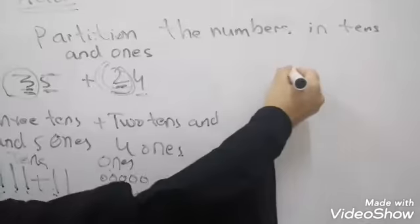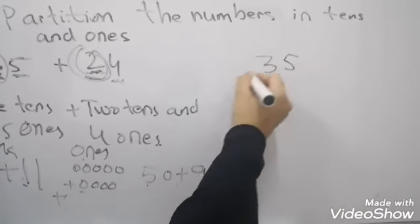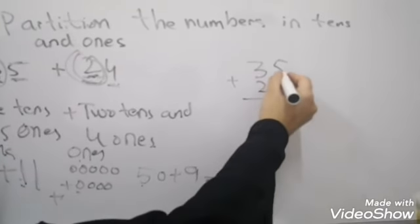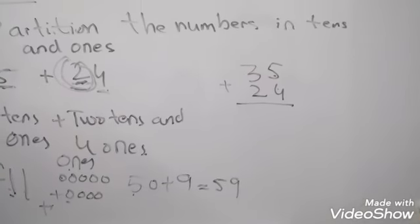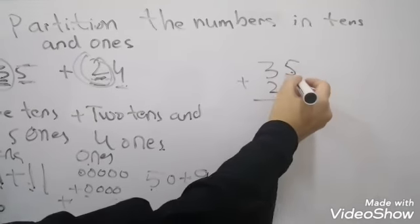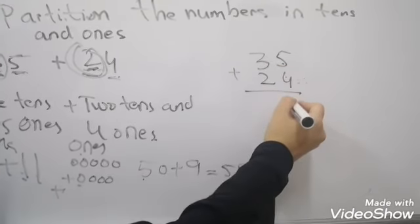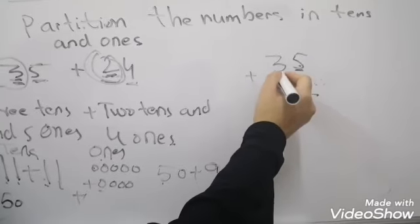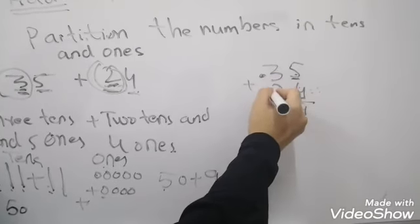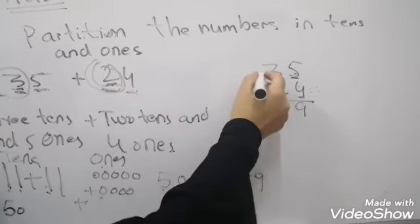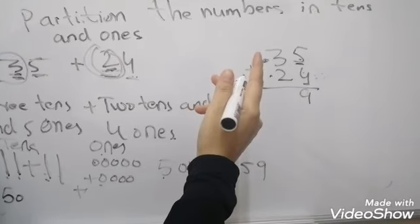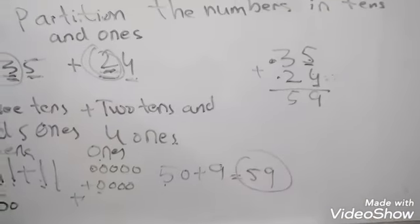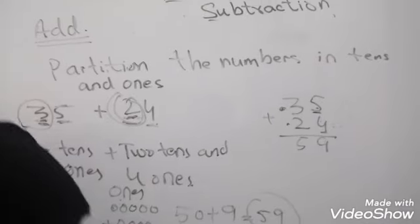So we can see 35 plus 24. 5 plus 4. 5 in your mind, 4 in your finger. 5, 6, 7, 8, 9. The big number in your mind, the smaller number in your fingers. The answer is 59. I hope you get the things that I taught you today.